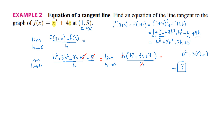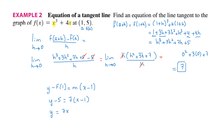They still want the equation of the tangent. Using the formula y minus f of a — f of 1 in this case — equals the slope of the tangent times x minus a, where a is 1. Substitute f of 1 by 5, the slope by 7, and we get y minus 5 equals 7 into x minus 1. Do the distributive property and add 5: y equals 7x minus 7 plus 5, which is minus 2. So y equals 7x minus 2.